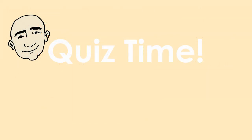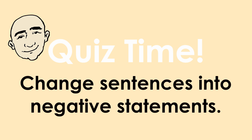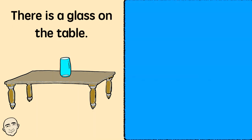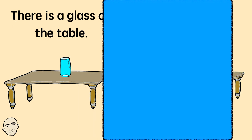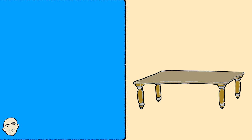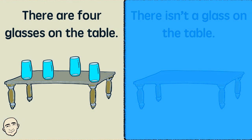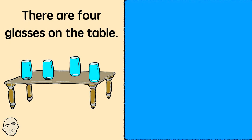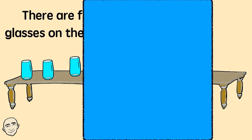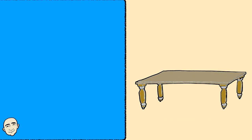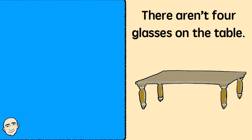Okay, quiz time. Change sentences into negative statements. There is a glass on the table. There isn't a glass on the table. There are four glasses on the table. There aren't four glasses on the table.